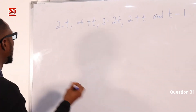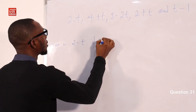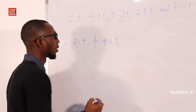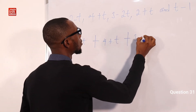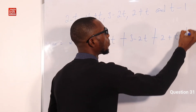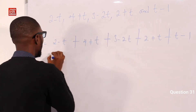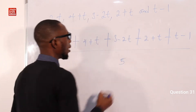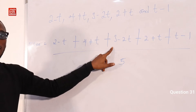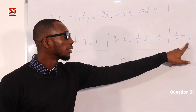Let's add them up. The mean equals (2 minus t) plus (4 plus t), being careful of the signs and letter t, plus (3 minus 2t), plus (2 plus t), plus (t minus 1), all over 5. Collecting the constants: 2 plus 4 is 6, plus 3 is 9, plus 2 is 11, minus 1 is 10.